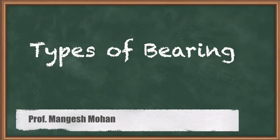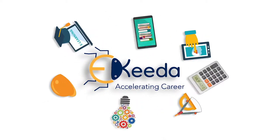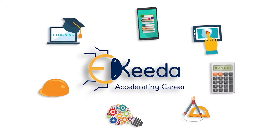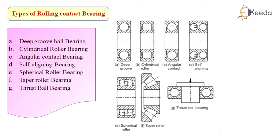Hello friends, let's talk about types of rolling contact bearing. A rolling contact bearing consists of four parts: inner and outer races, a rolling element like ball, roller or needle, and a cage which holds the rolling elements together and spaces them evenly around the periphery of the shaft.